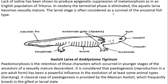The larval stage is often considered as a survival of the ancestral fish type. Here you can see the axolotl larva of Ambystoma. It has a caudal fin, a trunk, a mouth, an axolotl eye, and axolotl gills.